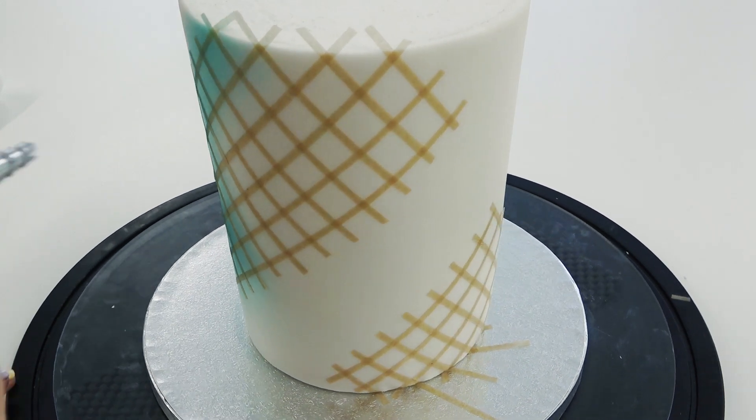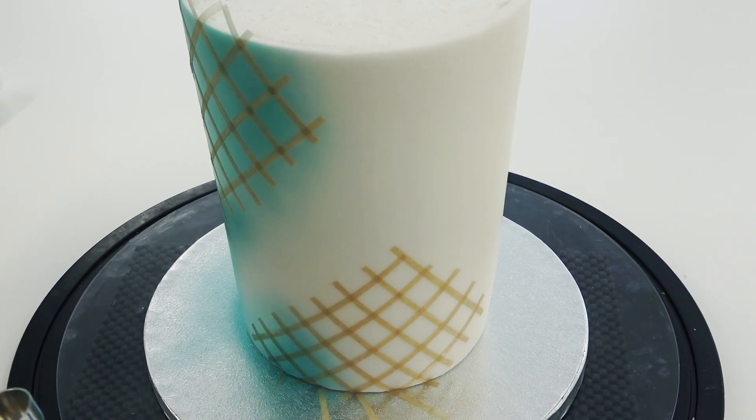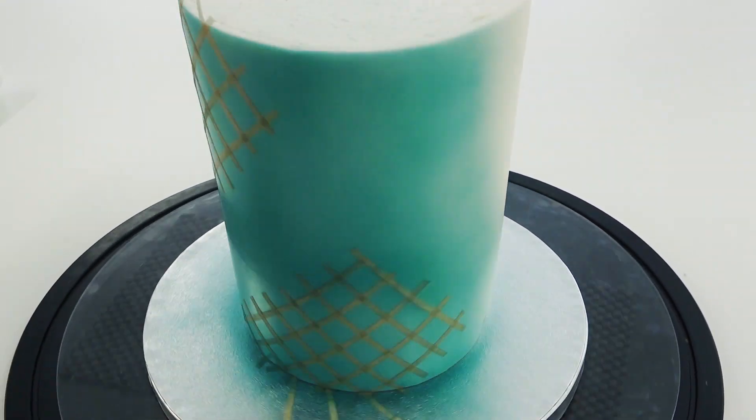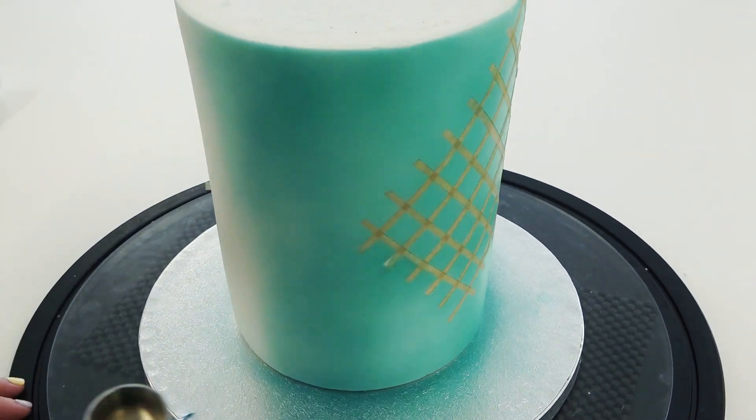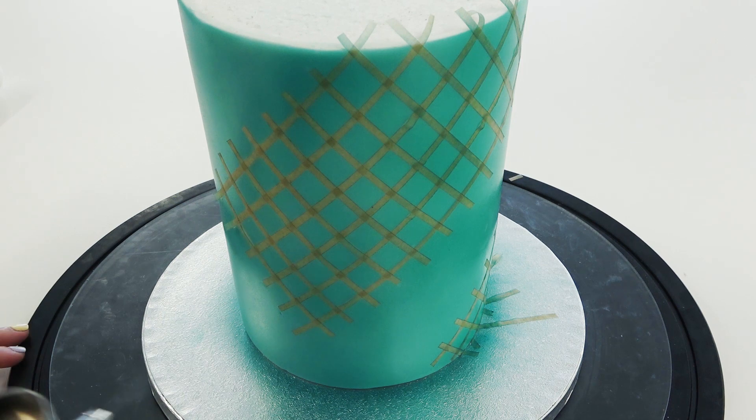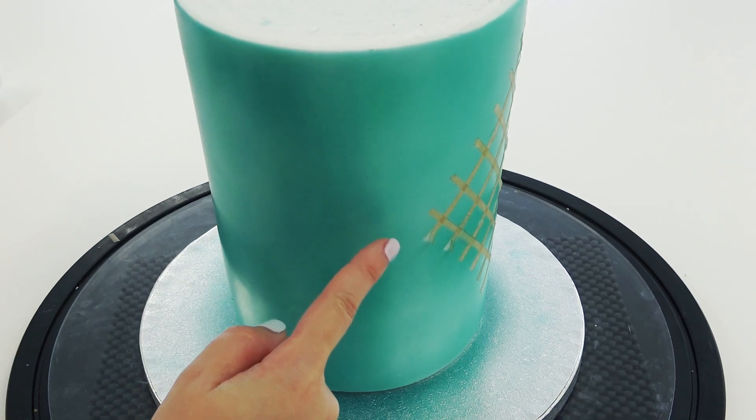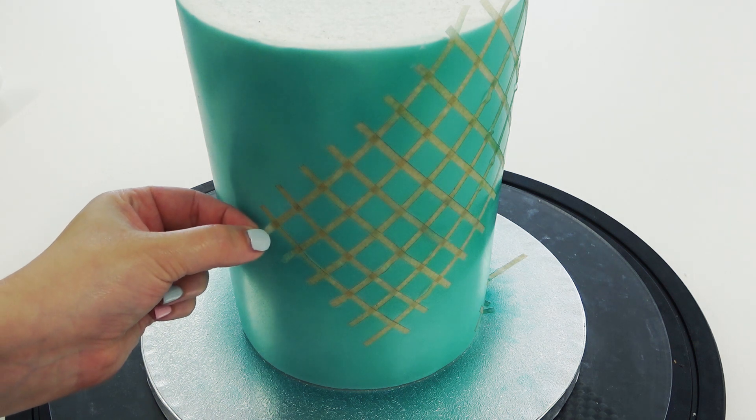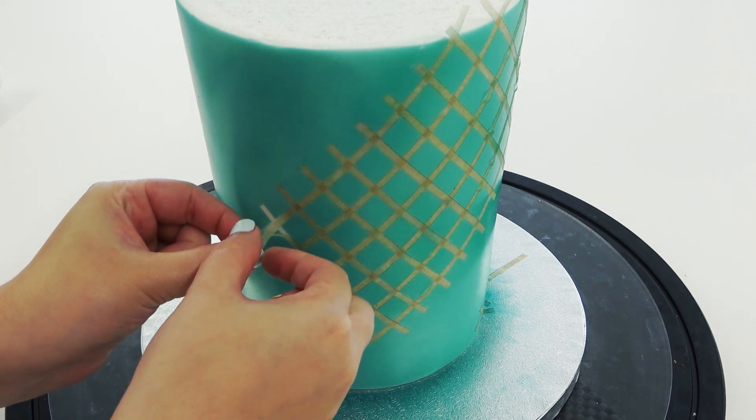So I filled up my airbrush gun with some turquoise water-based airbrush colour. Everything I use will be linked in the description box. I'm concentrating on spraying directly at the grid as to not lift the strips with the power of the air. I just see these ones are starting to lift here so any more spray and I would have made these a little bit more teal coloured instead of white underneath.